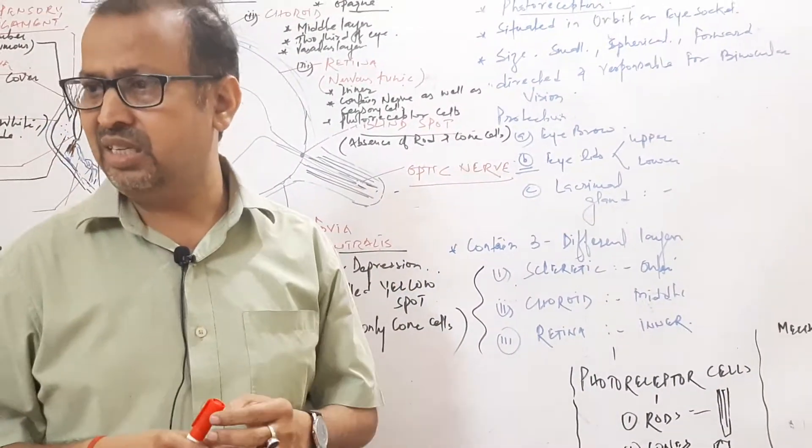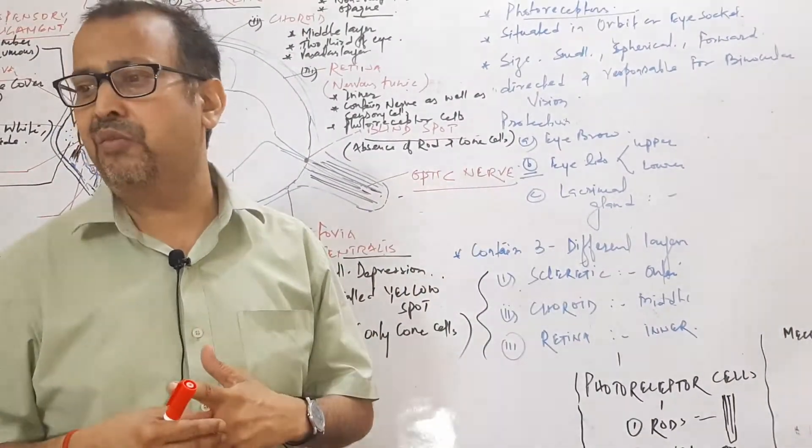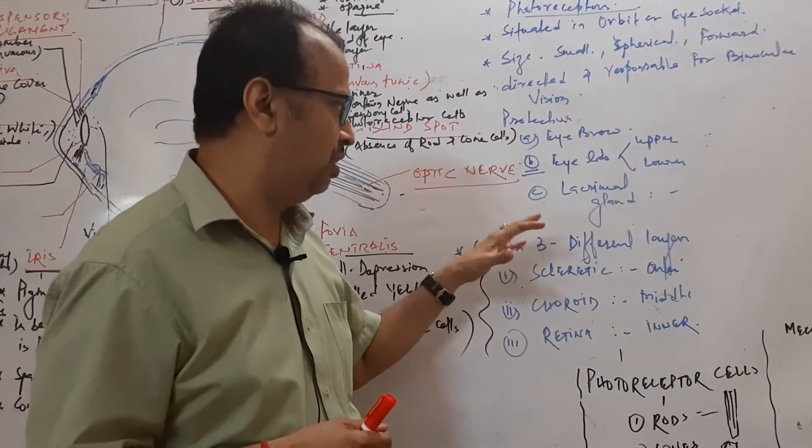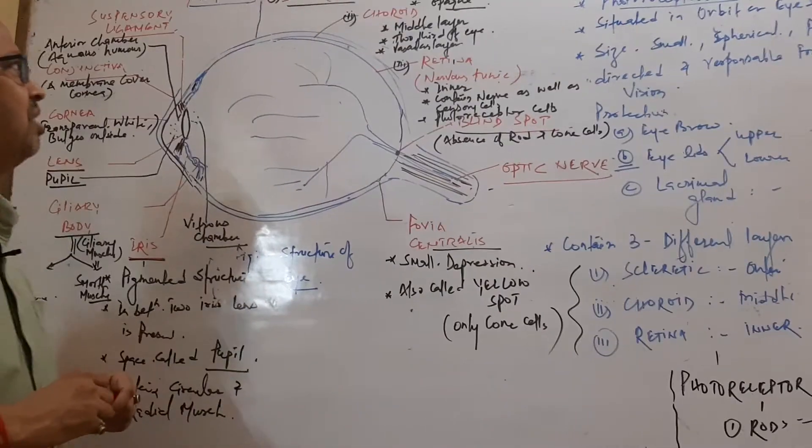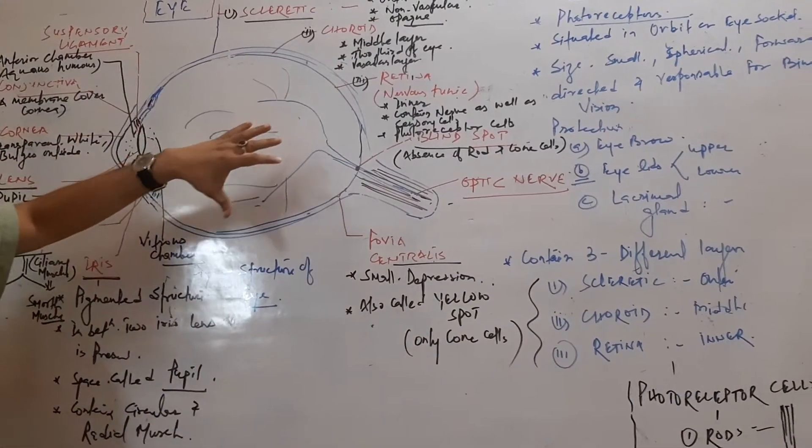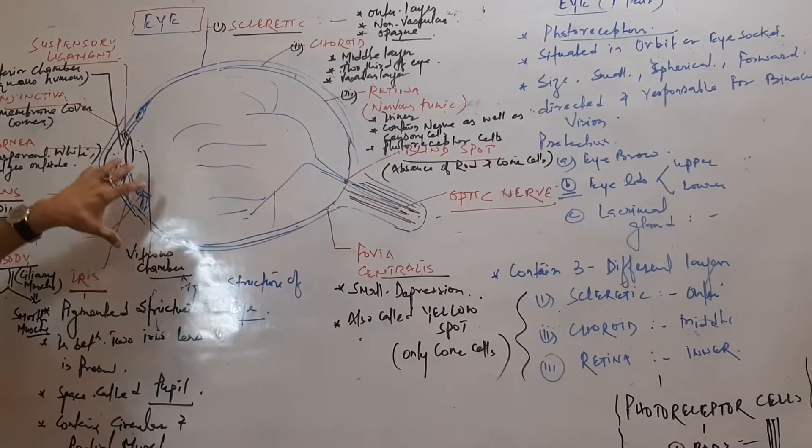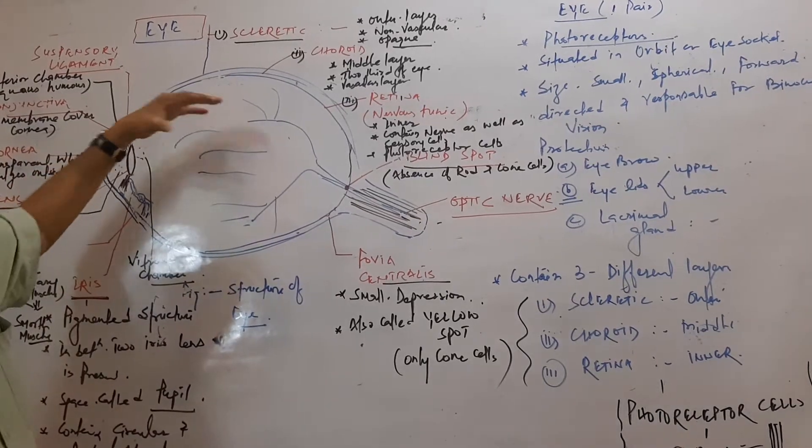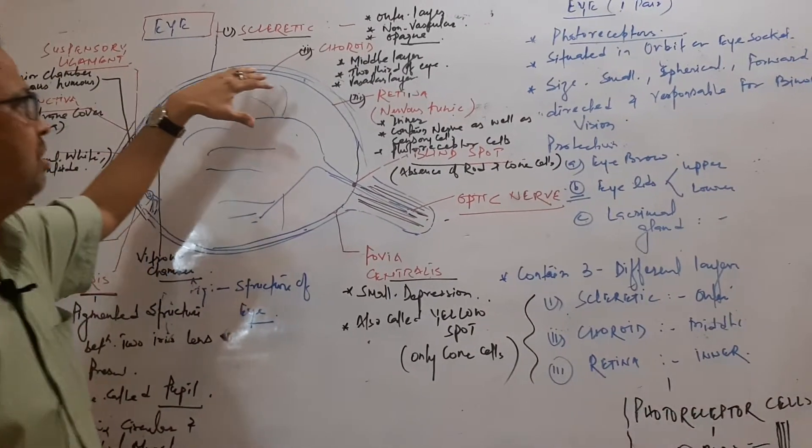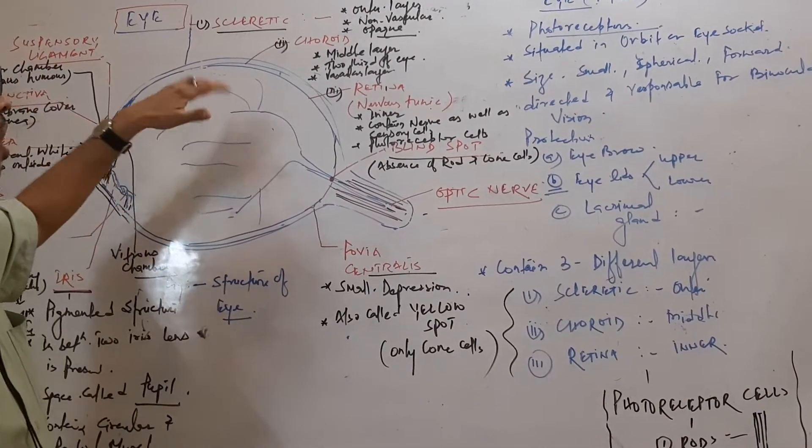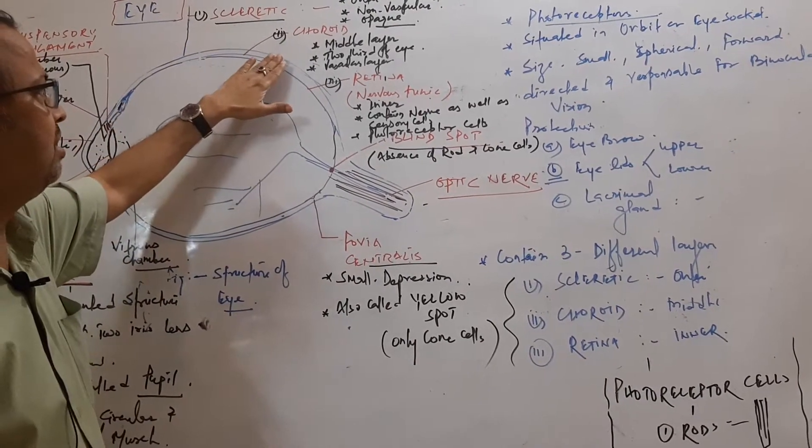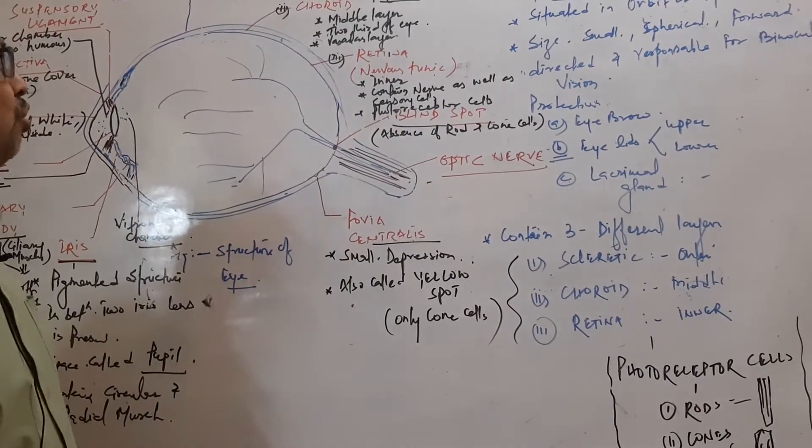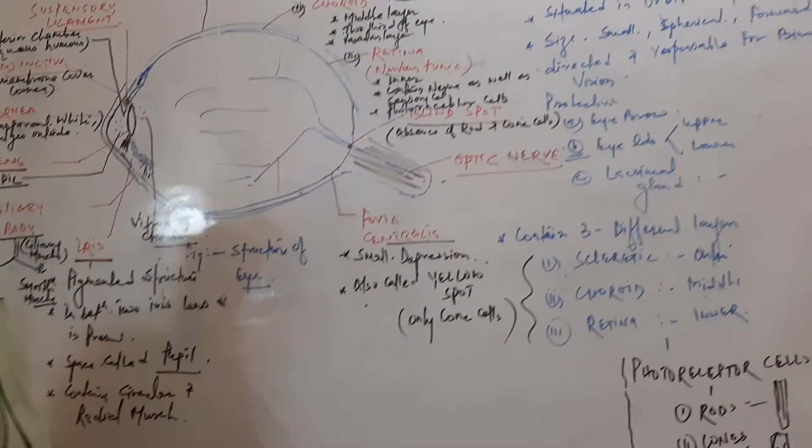Now we start the structure of the eye. This is the spherical structure of the eye, which contains three layers: outer, middle, and inner layer. The outer layer is called sclera, the middle layer is choroid, and the inner layer is called retina.